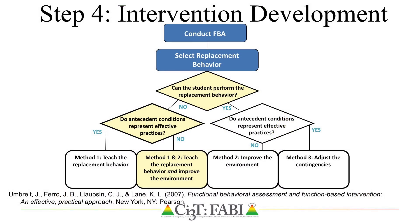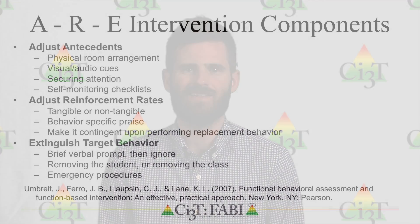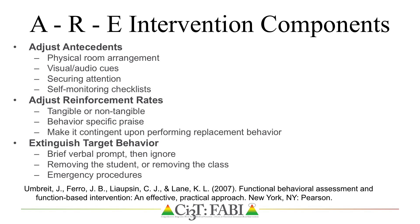Lastly, Method 1 and 2 is a combination of teaching the replacement behavior along with adjusting the environment. Once a method for the intervention is selected, teams may begin drafting their intervention, incorporating antecedent adjustments to prompt the desired replacement behavior, shifts in rates of reinforcement to increase the future probability of the desired replacement behavior occurring, and extinction procedures to decrease the likelihood of the target behavior from occurring.